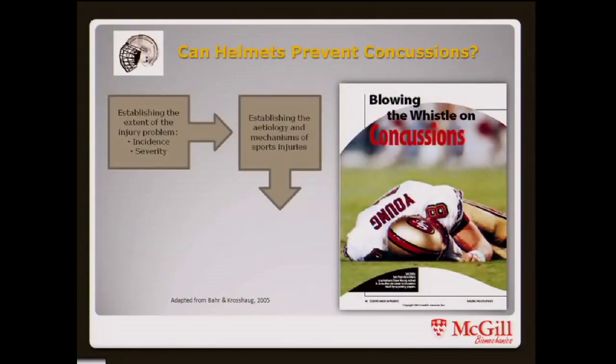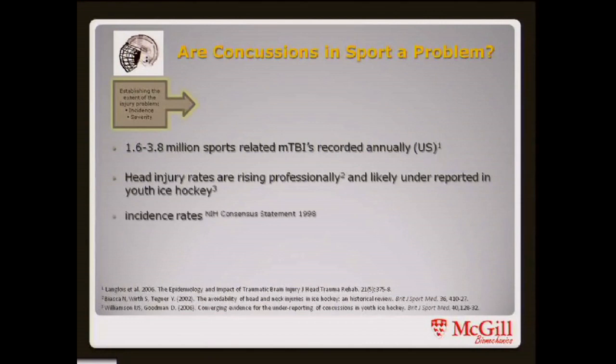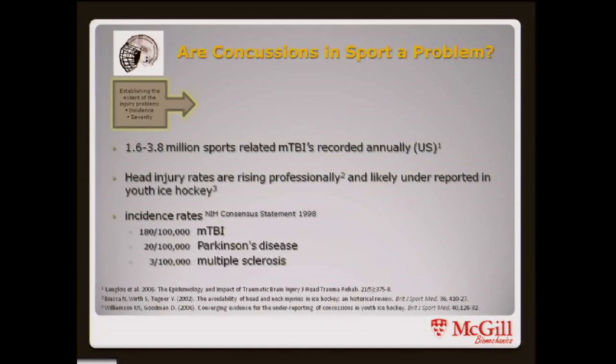In terms of evaluating concussions and understanding the incidence, we often understand the etiology of the mechanisms involved, how we can prevent those, and how we do iterative cycles within that. We see evidence that 1.6 to 3.8 million sport-related MTBIs — mild traumatic brain injuries — can occur annually. We see that it's rising in hockey, notably in Crosby and others, and that if we look at incidence rates of MTBI compared to Parkinson's and multiple sclerosis, it is a public health concern.